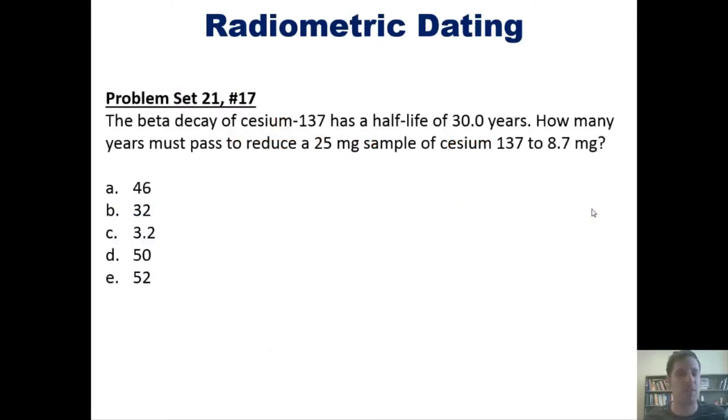First, the beta decay of cesium-137 has a half-life of 30 years. How many years must pass to reduce a 25 milligram sample of cesium-137 to 8.7 milligrams? I'm not going to do this for you here, but if you wish you can click the link here to a separate video in which I'll show you how to do it on the board.